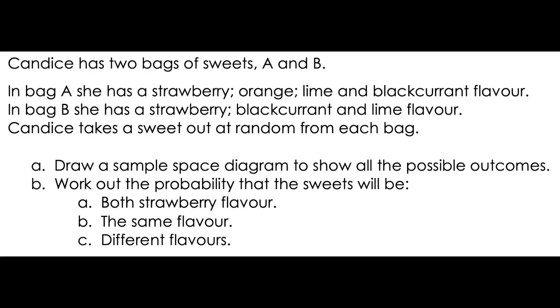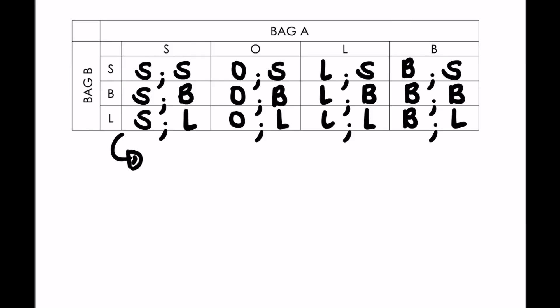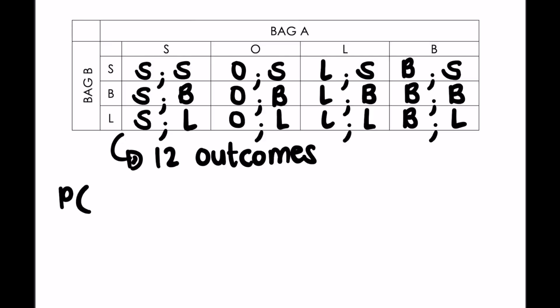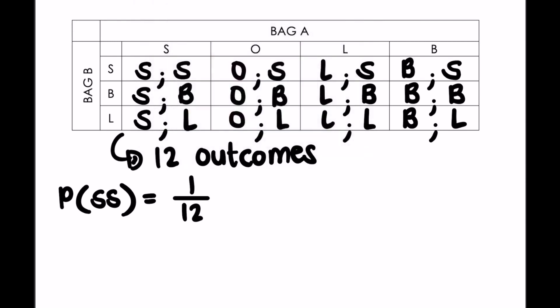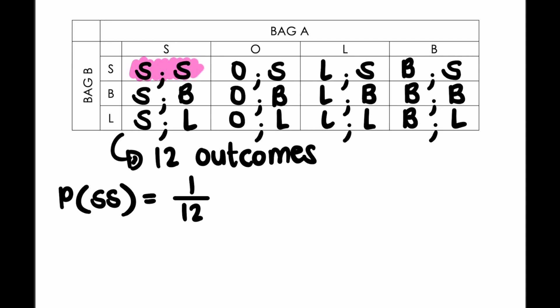The first question: work out the probability that both will be strawberry. We need to know our number of outcomes — counting gives us 12 outcomes. Alternatively, one bag has 4 options, the other has 3, so together we have 12 outcomes. How many have both sweets being strawberry? Only one option. So it's a 1 out of 12 probability of them both being strawberry.